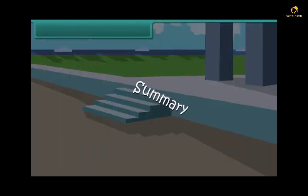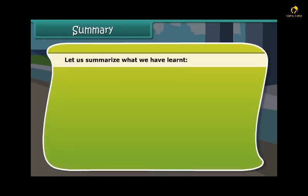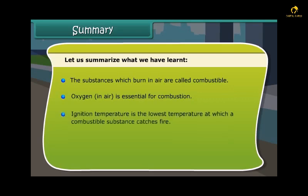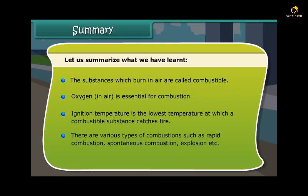Let us summarize what we have learned. The substances which burn in air are called combustible. Oxygen in air is essential for combustion. Ignition temperature is the lowest temperature at which a combustible substance catches fire. There are various types of combustion such as rapid combustion, spontaneous combustion, explosion, etc.